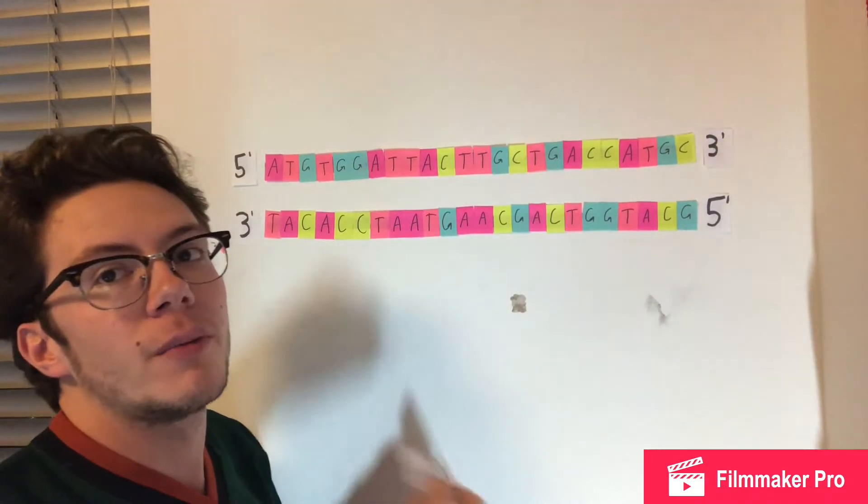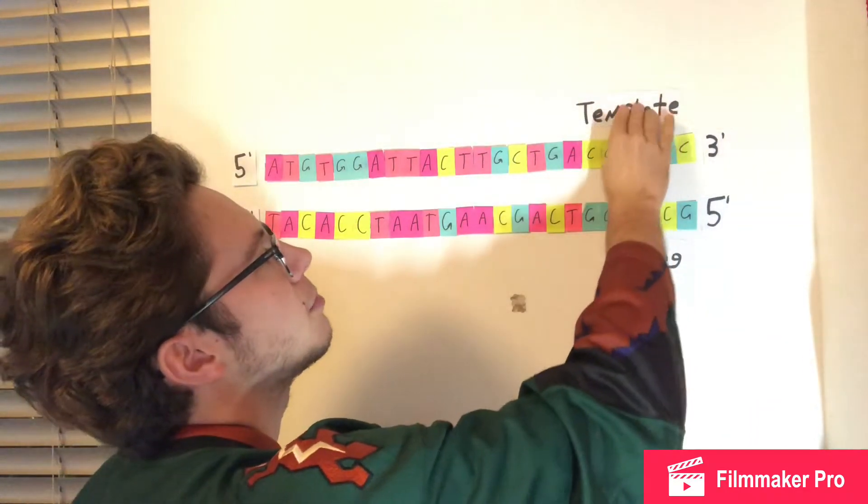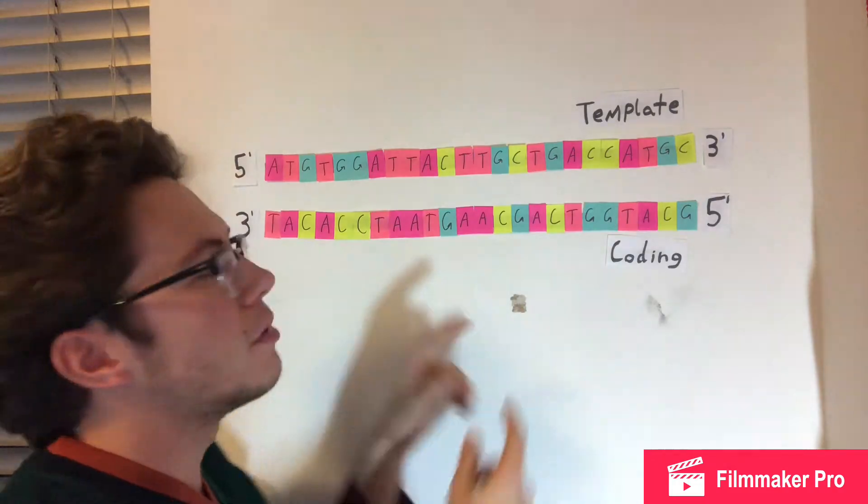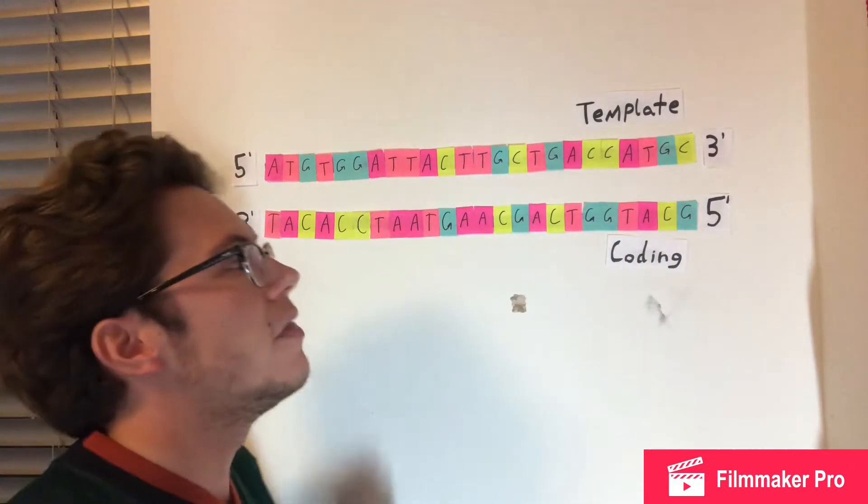Since our desired sequence is on the bottom strand, we can conclude that it is the coding strand and that the top strand is the template strand. So what I'm going to do is flip the coding strand so it goes from five prime to three prime, and then we can go on to transcribing and translating the DNA.